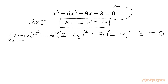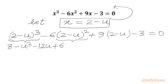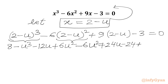Now we can use the (a minus b)³ formula and (a minus b)² formula. Expanding, we get 8 minus u³ minus 12u plus 6u². Then simplifying the second term gives minus 6u² plus 24u minus 24. Then the third and fourth terms give 18 minus 9u minus 3 equal to 0.